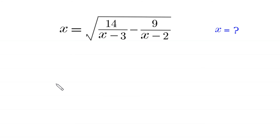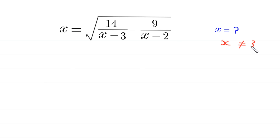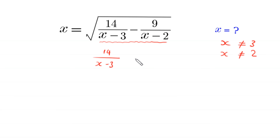Hello everyone, welcome to how to solve this very nice radical equation: x is equal to the square root of 14 over (x minus 3) minus 9 over (x minus 2). We need to find all possible values of x. Since x minus 3 and x minus 2 are in the denominator, x cannot be equal to 3 and x cannot be equal to 2. The expression under the square root must be greater than or equal to 0.